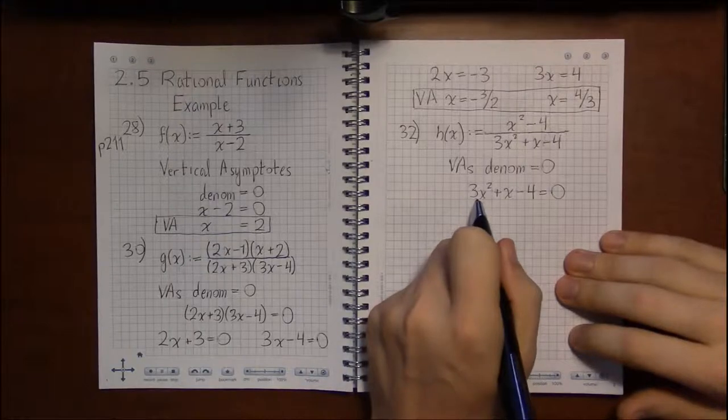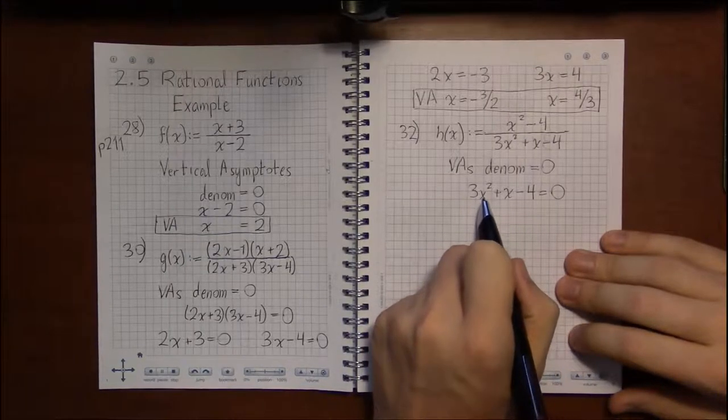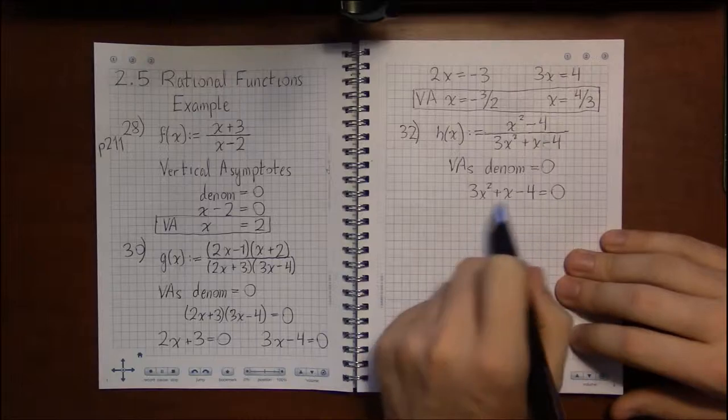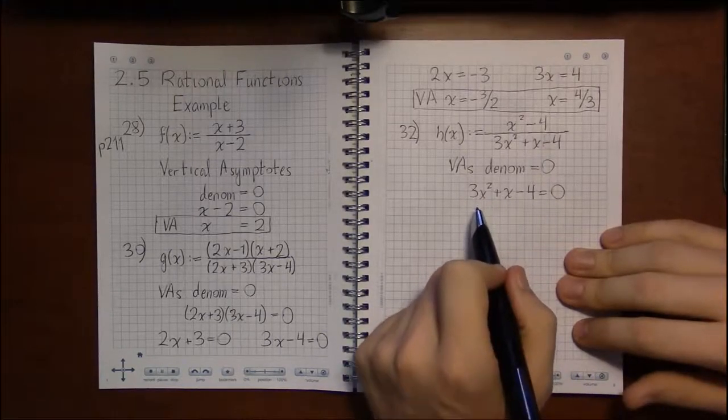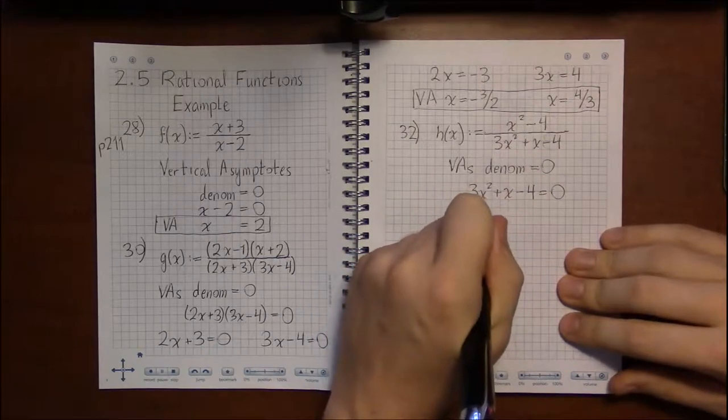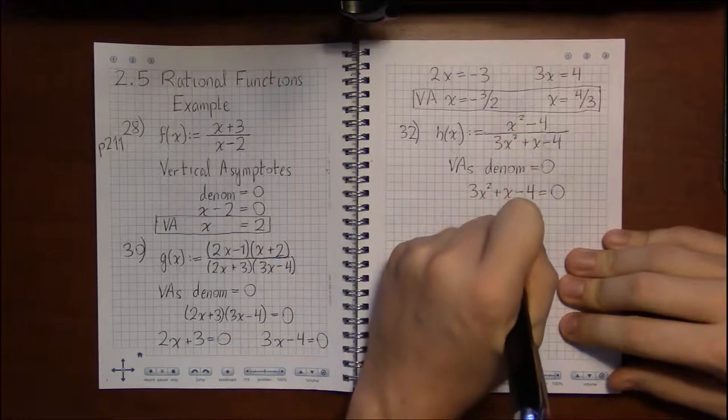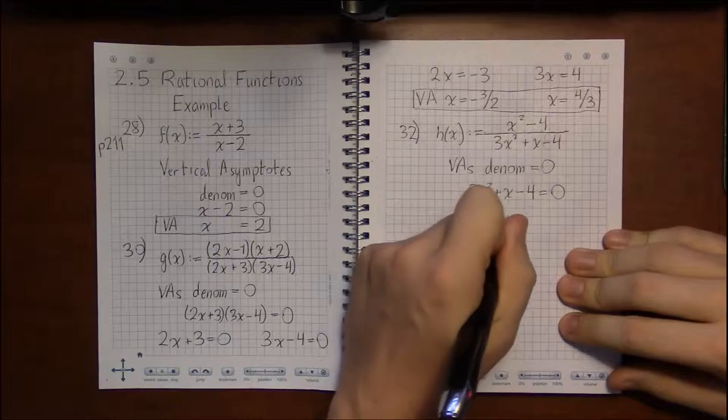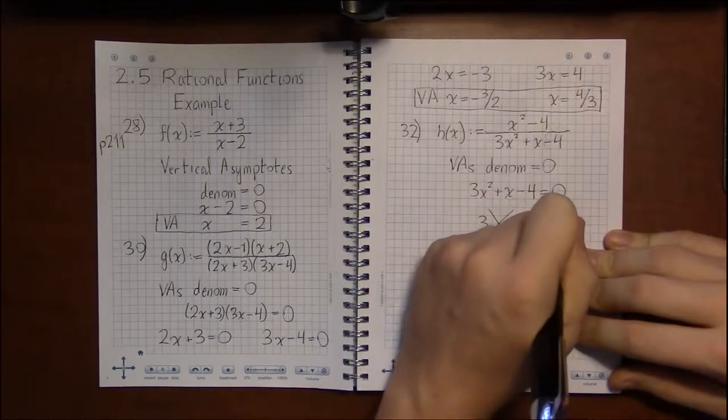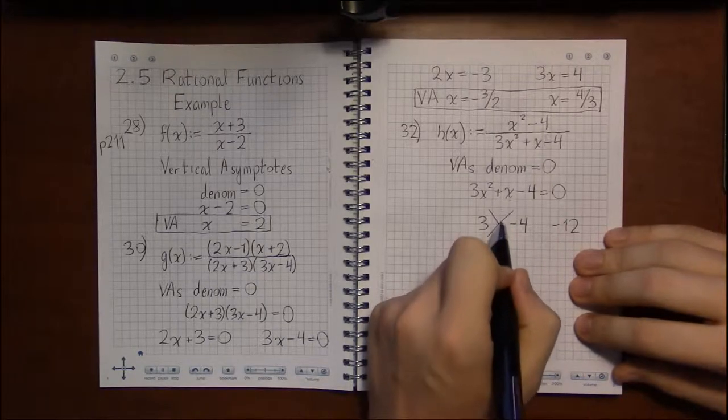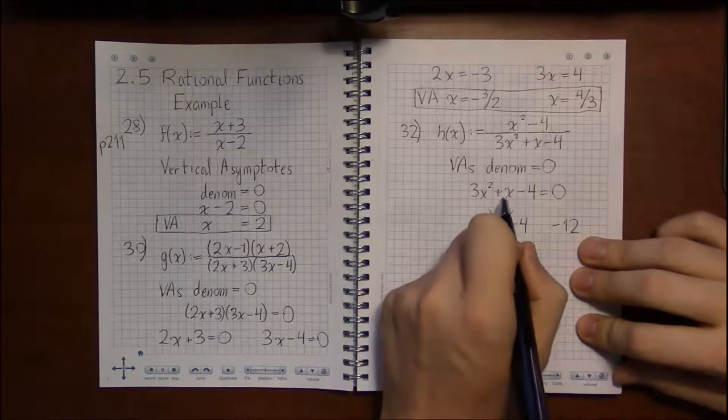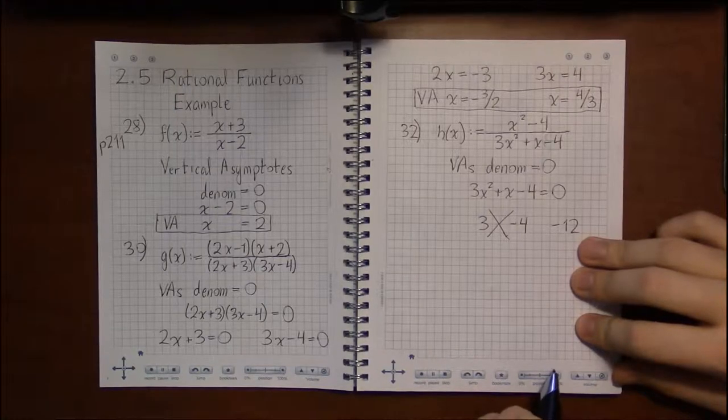We're going to set 3x squared plus x minus 4 equal to zero. I see numbers, I see x squared, I see an x by itself, so I must have a quadratic. Everything's already to one side, so let me see if this factors. I'm going to do 3 times minus 4, that's minus 12. And can I get factors of minus 12 which add to a plus 1?